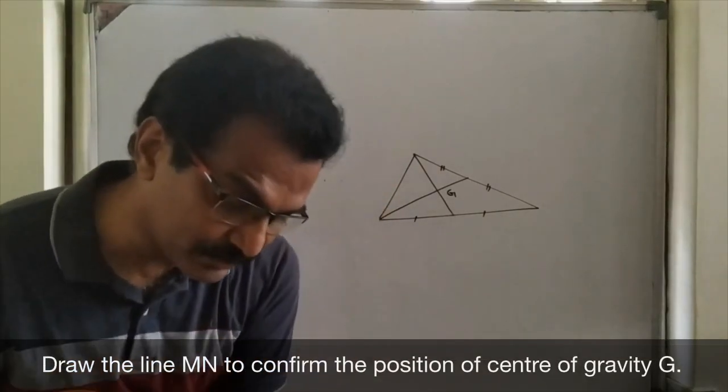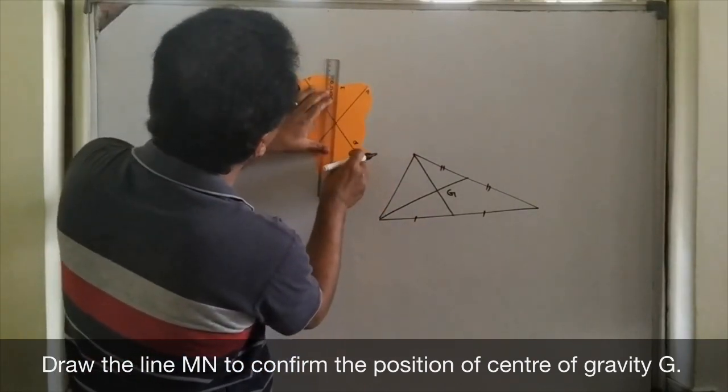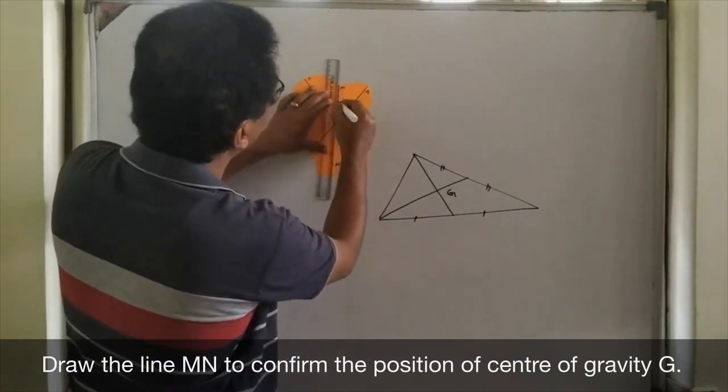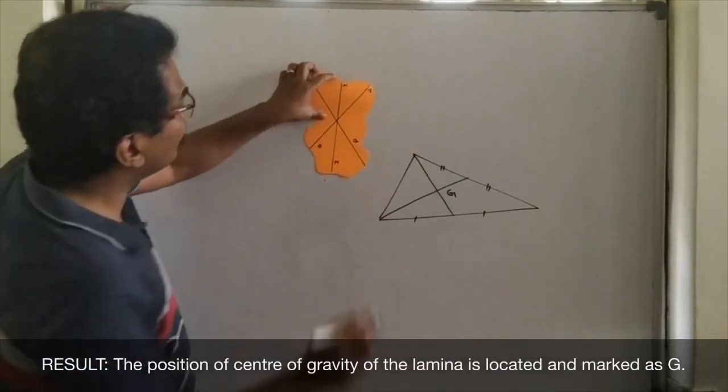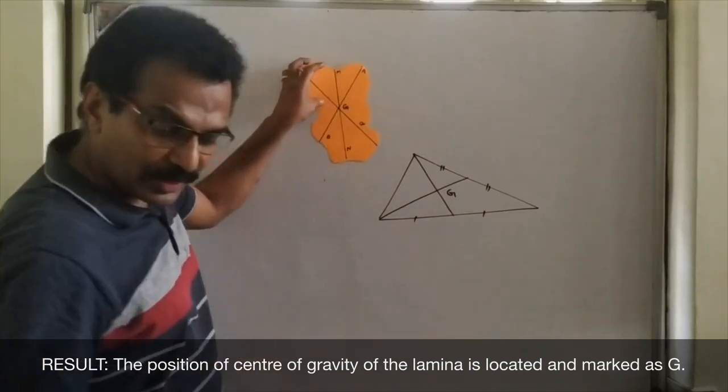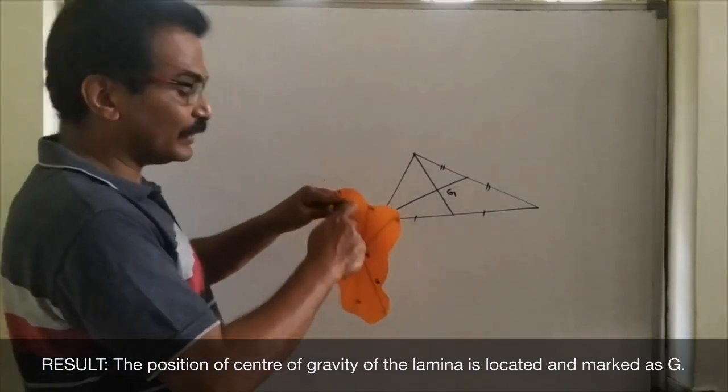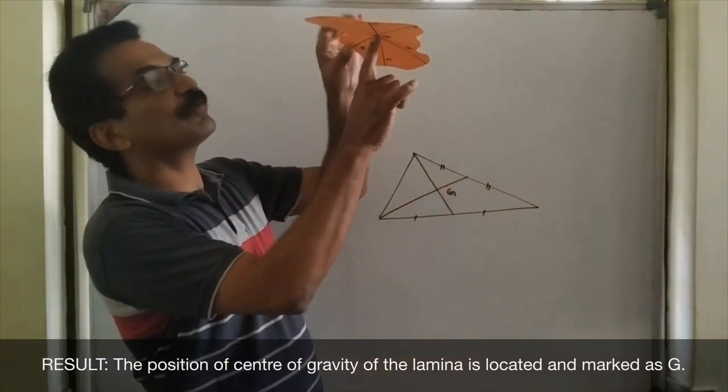When I join, it is confirmed. It will pass through the same point here C. So, here this is the center of gravity. I represent it by the letter G. And at that point, lamina is balanced.